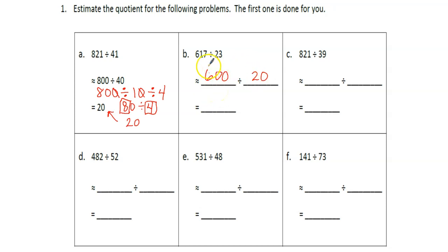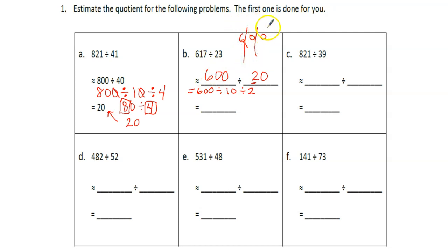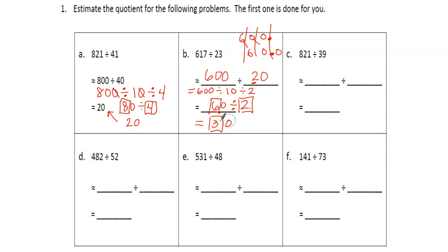Let's go ahead and do this the way we've been doing it. This is equal to 600 divided by — and I'm going to factor out this 20. 20 is equal to 2 in the tens place. So 600 divided by 20 is the same thing as 600 divided by 10, divided by 2. 600 divided by 10 — on my place value chart, my 600 just moves over one place value unit to the right — that's 6 tens. 6 tens divided by 2: 6 divided by 2 is 3, so 6 tens divided by 2 is 3 tens, or 30.